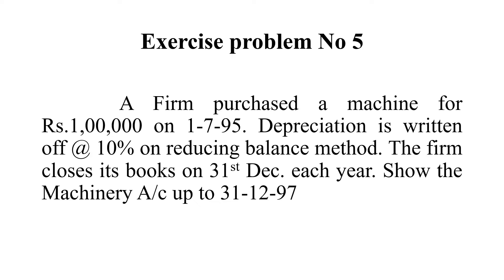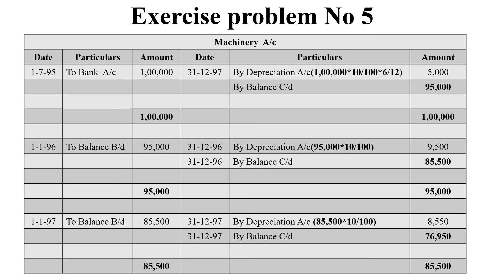We need to show the machinery account up to 31-12-97. So from July 1995, we have to work through to December 1997 on the machinery account and calculate the value of machinery as on 31st December 1997 using the written down value method.